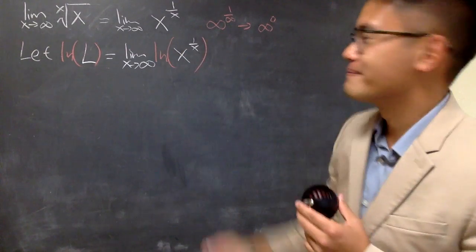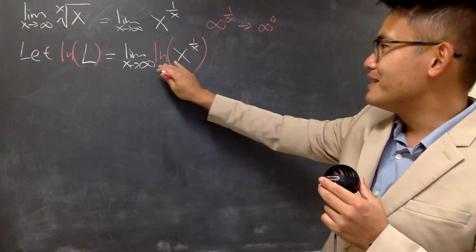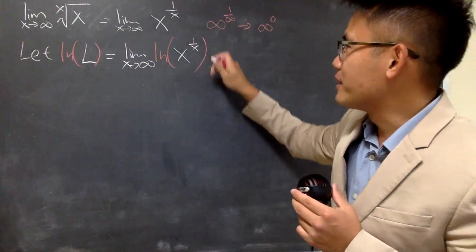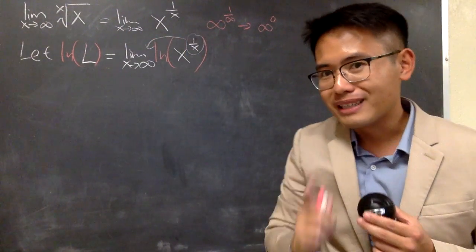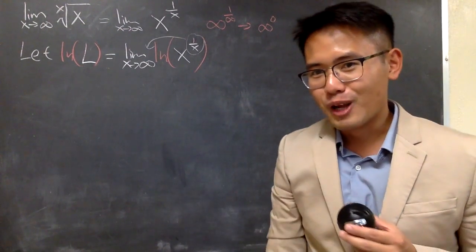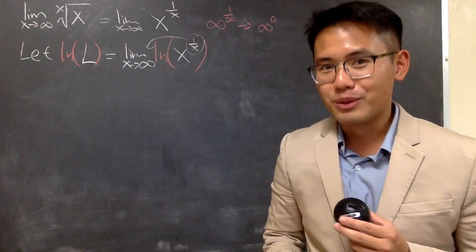So, I'll just put it right here. And, once we have this natural log, when we have this power here, I can just actually take this to the front. But, don't subtract 1. This is just the natural log property. It's not the power rule for the derivative.